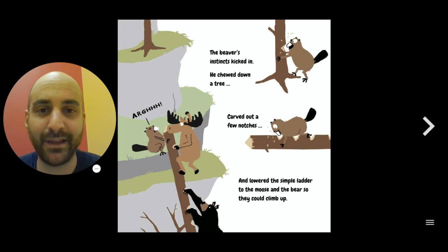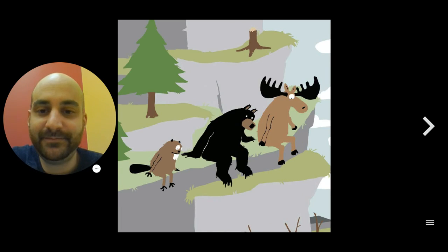The beaver's instincts kicked in. He chewed down a tree, and he carved out a few notches with his teeth. He lowered the simple ladder to the moose and the bear so they could climb up. That's really clever, because I don't think he was strong enough to pull the moose and the bear up himself. But he's got the advantage with his teeth.